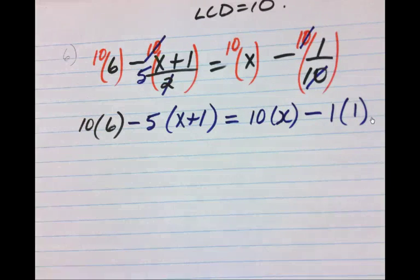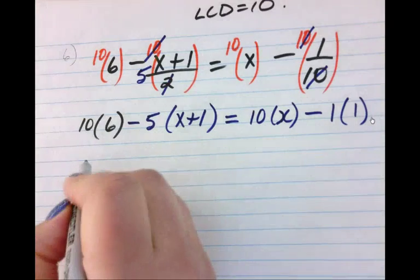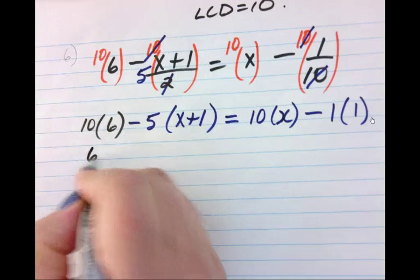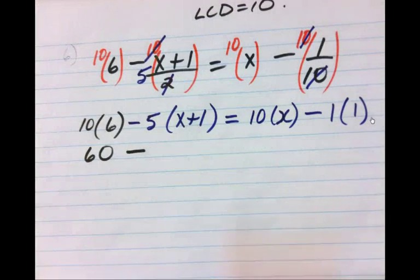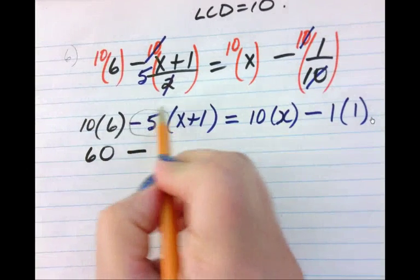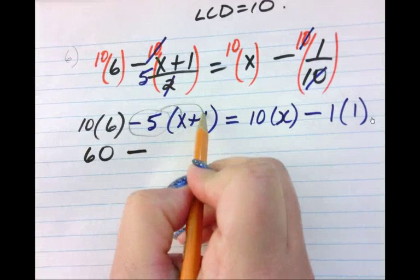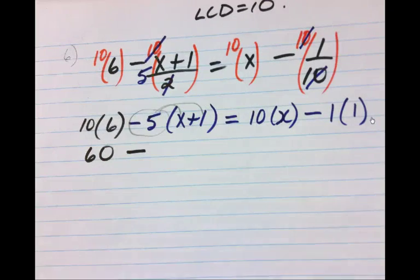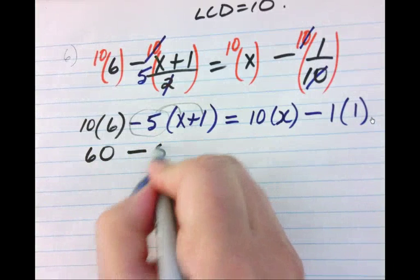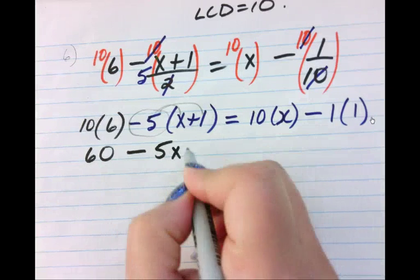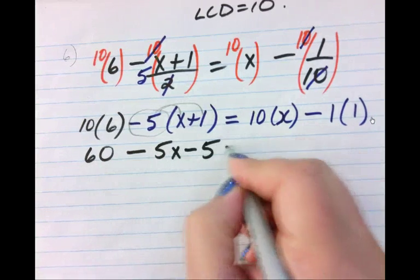Okay, so let's clean everything up, multiply through, use the distributive property: 60 minus, now remember this negative 5 gets distributed through the bracket, so I have negative 5 times x is negative 5x minus 5, that equals 10x minus 1.